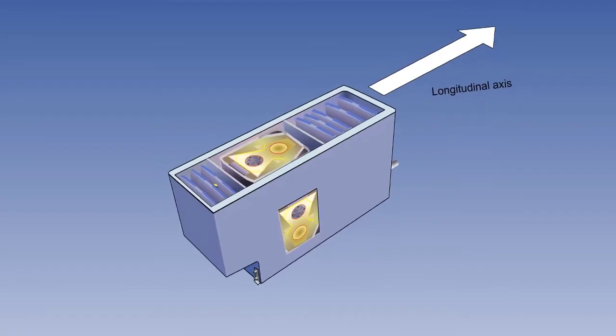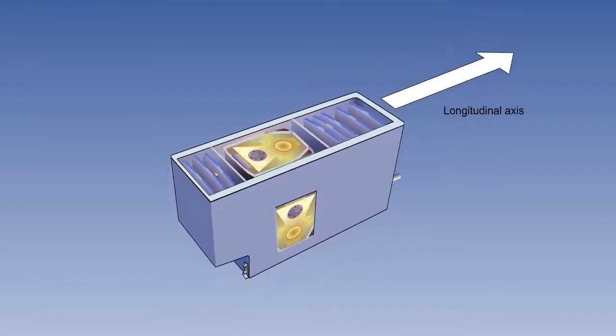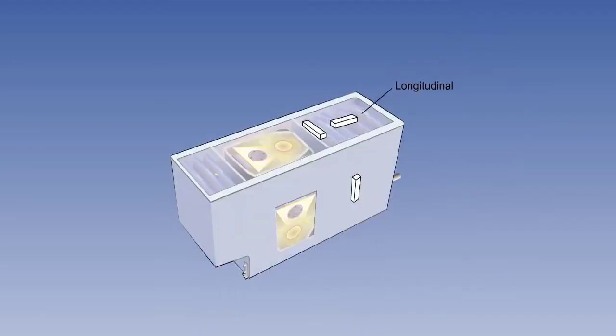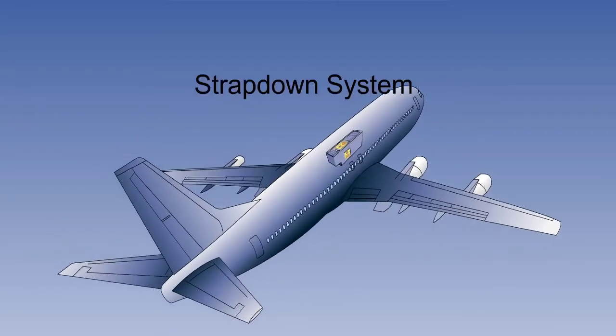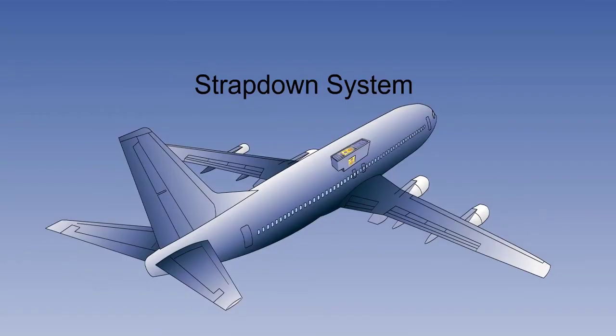These ring laser gyros are not gimballed. They are fixed to the airframe, and they change their orientation as the aircraft maneuvers. The accelerometers are also in fixed positions: longitudinal, lateral, and normal or vertical with respect to the airframe. A system where the gyros and accelerometers are fixed to the airframe and maneuver with it is called a strap-down system.